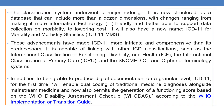The ICD-11 classification system underwent a major redesign. It is now structured as a database that can include more than a dozen dimensions, with changes ranging from making it more IT-friendly and better able to support data collection on morbidity to lowering cost. It will also have a new name: ICD-11 for Mortality and Morbidity Statistics, or ICD-11-MMS. These advancements have made ICD-11 more intricate and comprehensive than its predecessors.